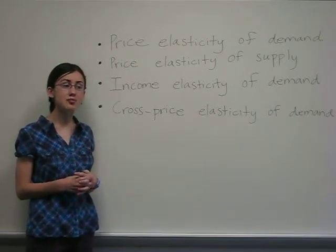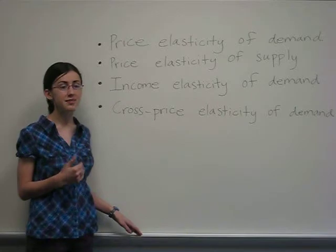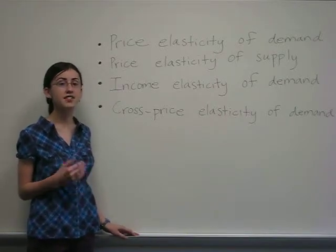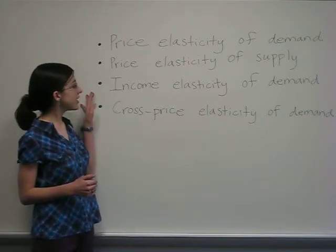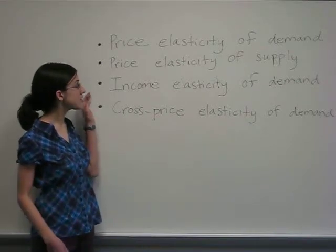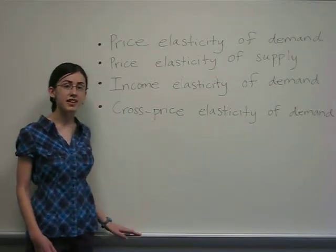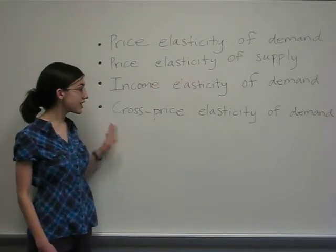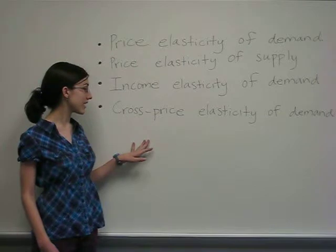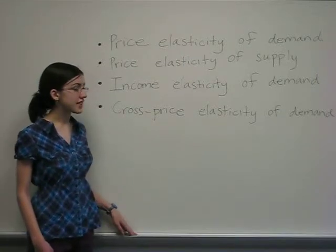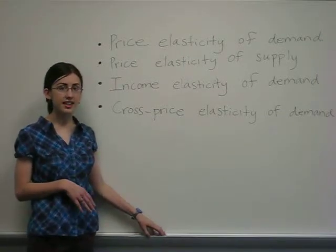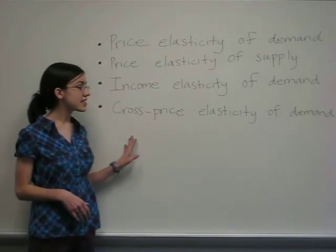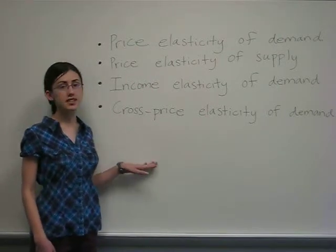In general, consumers will increase the quantity demanded of a good when price decreases, while suppliers will decrease quantity supplied for that decrease in price. Income elasticity of demand refers to the change in quantity demanded of a certain good to the change in consumer incomes. Cross-price elasticity of demand measures the responsiveness of the change in quantity demanded of one good to the change in price of another, and can be used to determine whether goods are complements or substitutes.